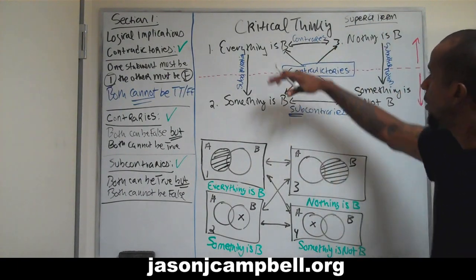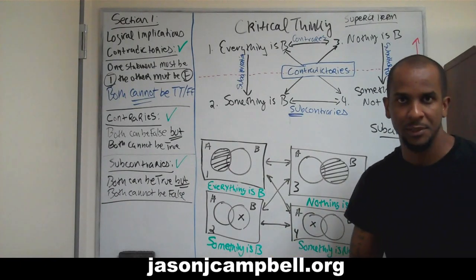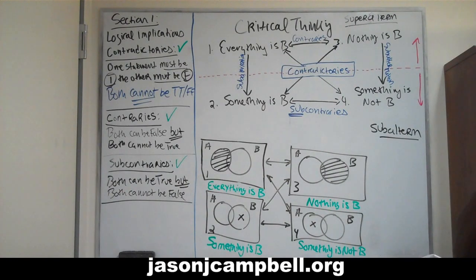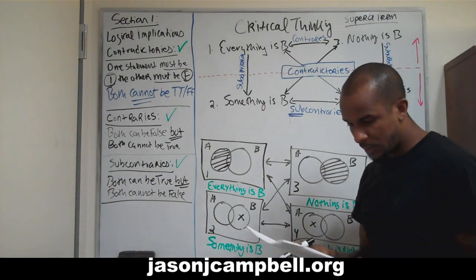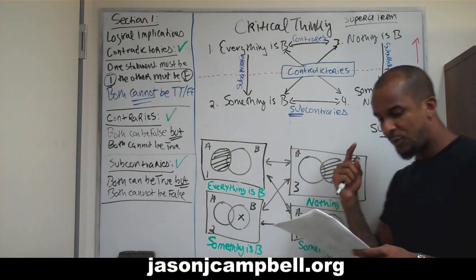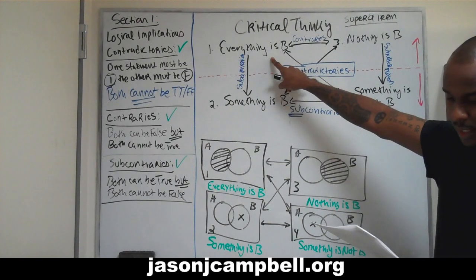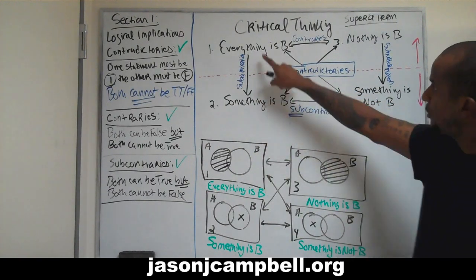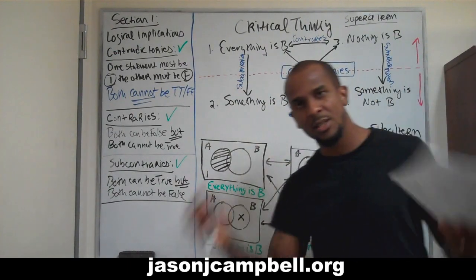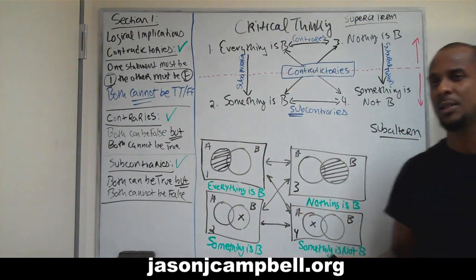So: contradictories going diagonal, contraries top half horizontal, subcontraries bottom half horizontal. Superaltern top half going down, subaltern bottom half going up. Just commit that to memory. Next, let's look at the relationship. In subalternation number 7, if 1 is true, then we recognize 2 must be true. If 'everything is B' is true, then 'something is B' is obviously true. There's a technical term for that — it's known as instantiation. I'm instantiating from a general claim.